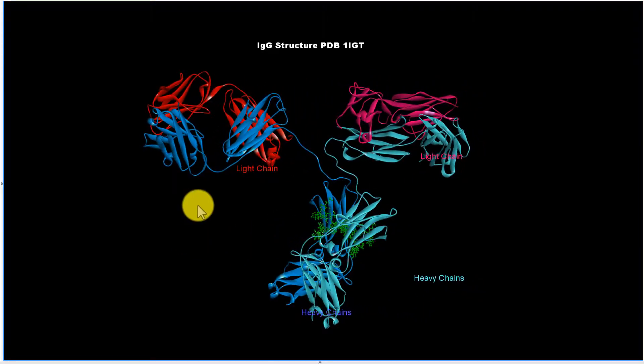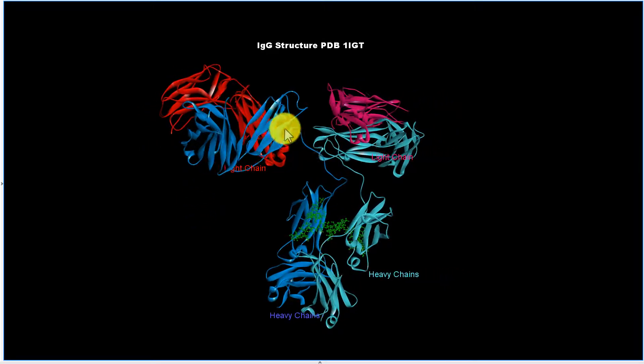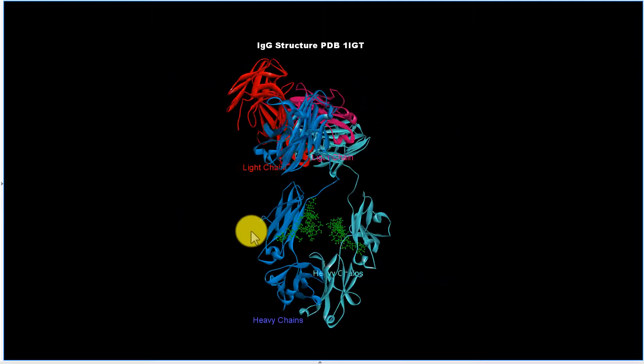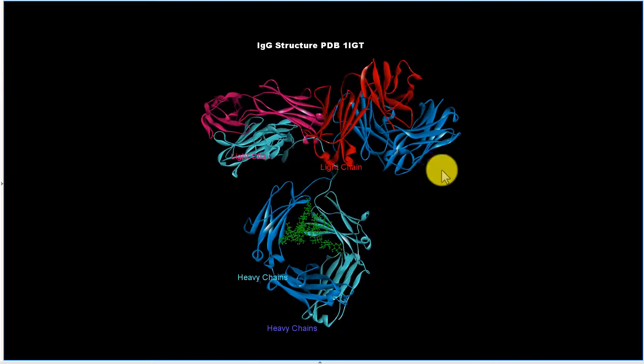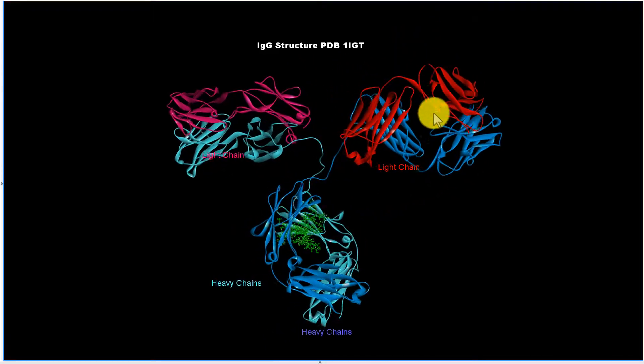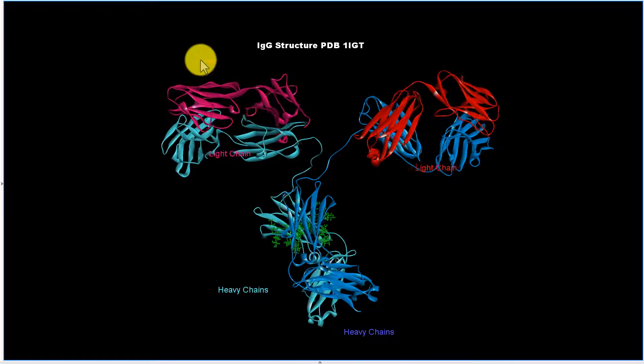You can see that there are multiple folds. There are variable regions for the light chains and heavy chains out here. You can see those two variable regions here and here.